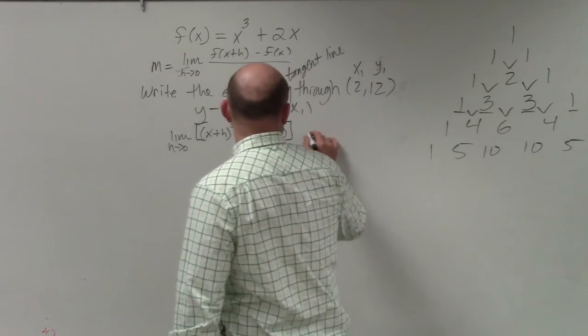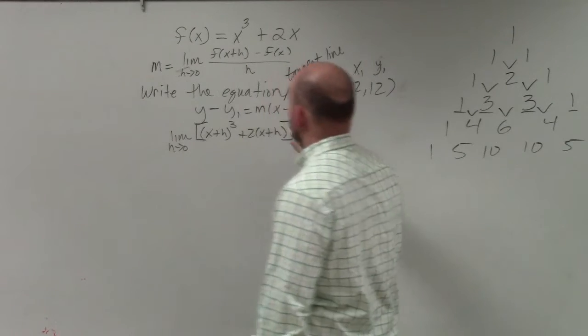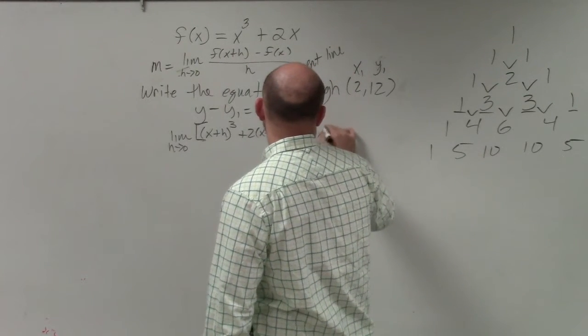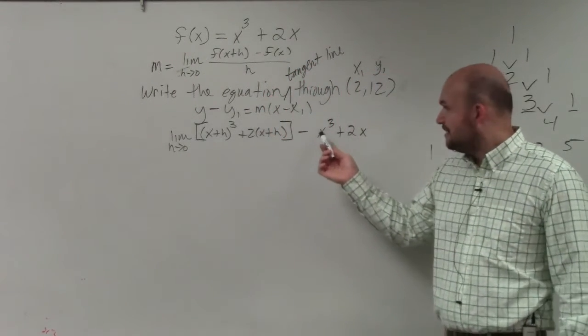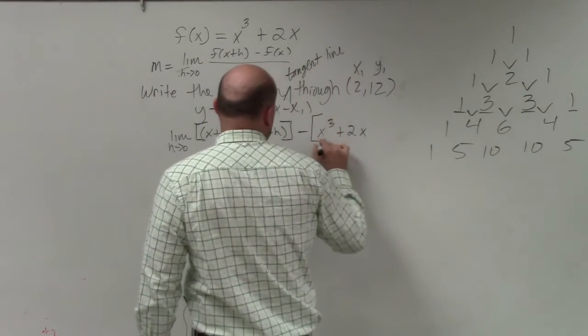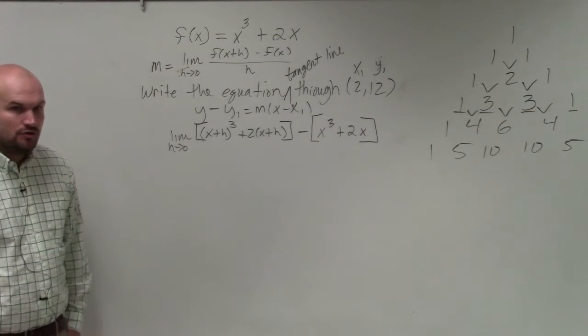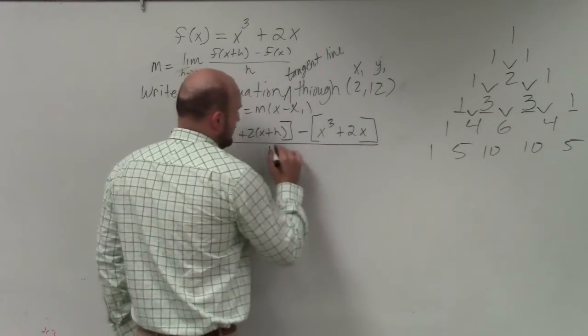And then you're going to minus, and again, you're going to want to make sure you put parentheses or brackets around this, because what most commonly students will do is they will just write in x cubed plus 2x. And if you don't put parentheses or brackets, then you're just subtracting an x cubed. We need to make sure we're subtracting all of f of x. Then this is all divided by h.